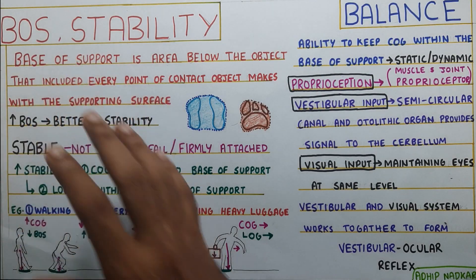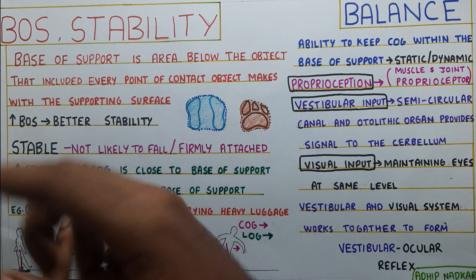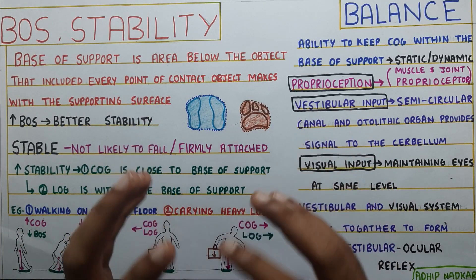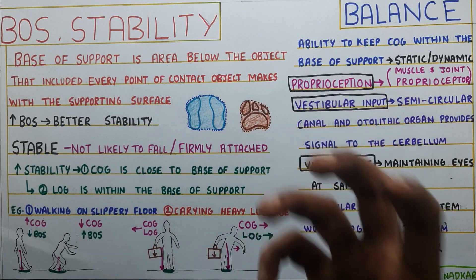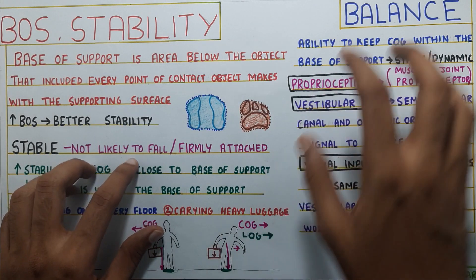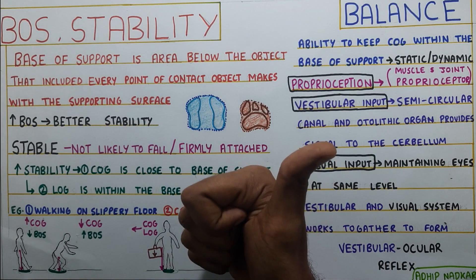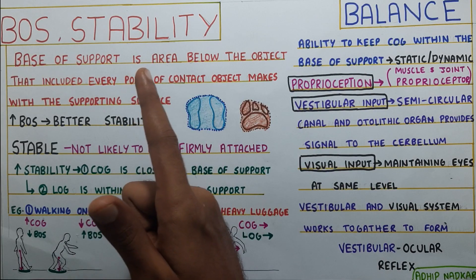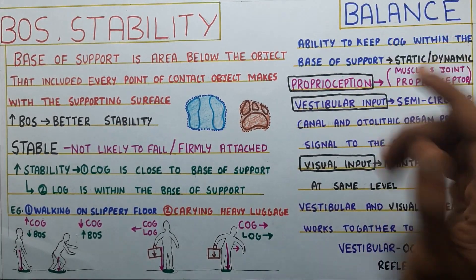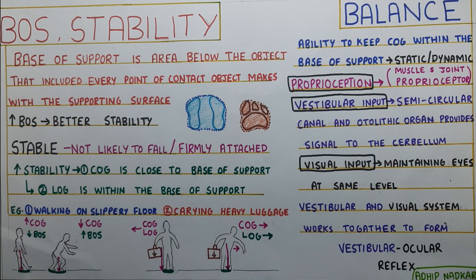To summarize: we talked about base of support, stability, and the difference between stability and balance. Stability has two components — one relates to balance, where reducing stability allows you to train balance; the other relates to providing a stable base for joints to generate force, like training scapular muscles to throw a ball farther. The not-likely-to-fall component involves keeping center of gravity close to the base of support and keeping the line of gravity within it. Balance is the ability to keep center of gravity within the base of support, achieved through proprioception, vestibular input, and visual input. Thank you for watching. Please share, subscribe, and like the video.